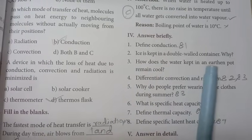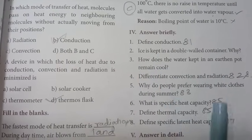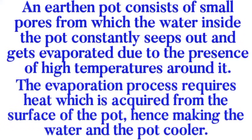Third one: How does the water kept in an earthen pot remain cool? An earthen pot consists of small pores from which the water inside the pot constantly seeps out and gets evaporated due to the presence of high temperatures around it. The evaporation process requires heat which is acquired from the surface of the pot. Hence, making the water and the pot cooler.